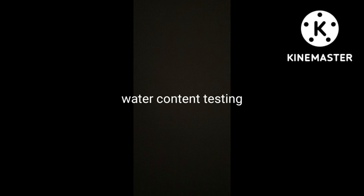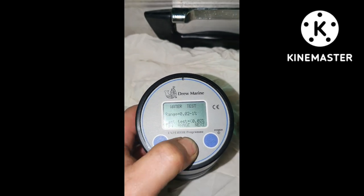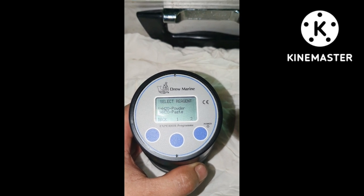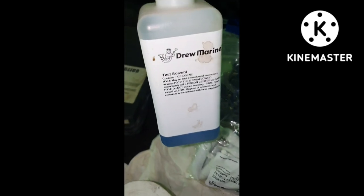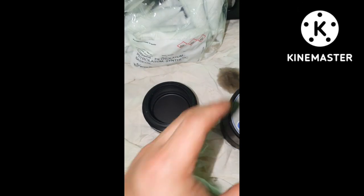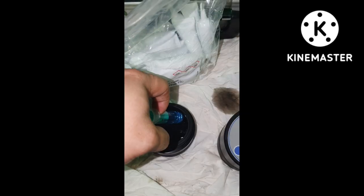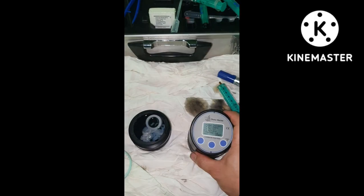Next is the water content testing. We use the DrewMarine device to measure water content in our oil. Choose the range from 0.02 to 1%. Press next, then press 2 for H2O paste. You can see the procedures and requirements for the testing. Pour test solvent into the beaker — 10 ml of test solvent poured to the lid, then another 10 ml. Put the H2O paste, then 5 ml of oil sample. Put the agitator and place the lid.